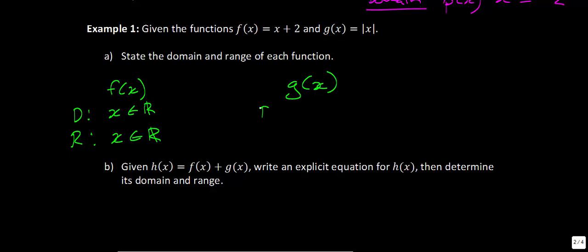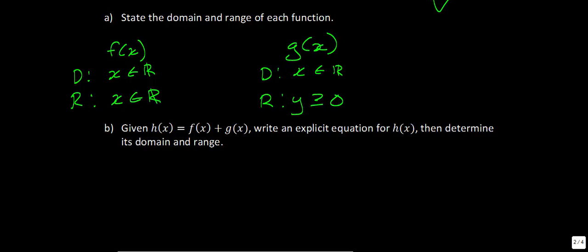g(x) = |x| is an absolute value function. When it's linear like this, it makes a V-shape, so the graph goes infinitely in the x-direction (domain is all reals), but we can't have negative y-values, so y ≥ 0. For part b, given h(x) = f(x) + g(x), we write the explicit equation: h(x) = (x + 2) + |x|. That's all you need to do.